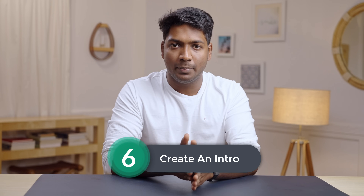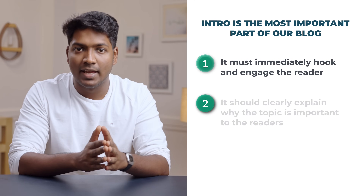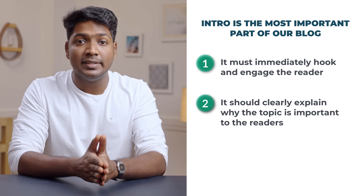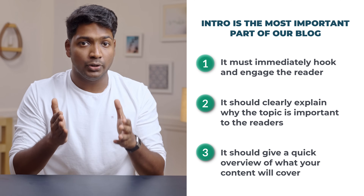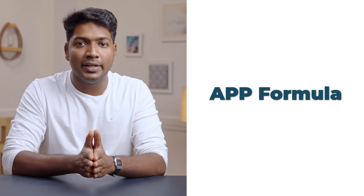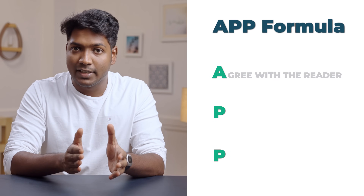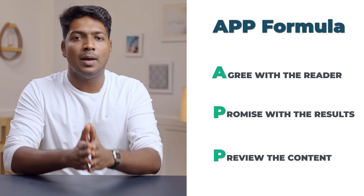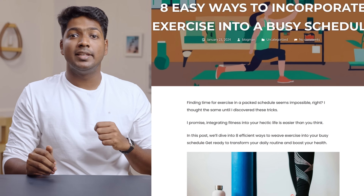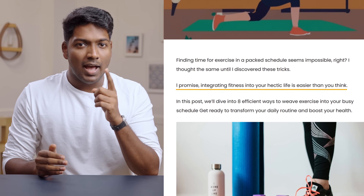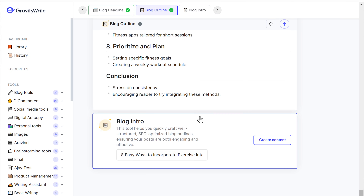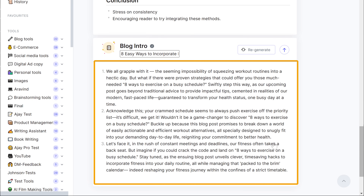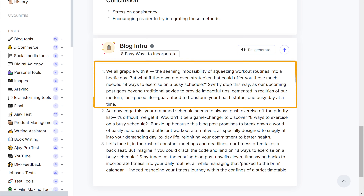Once you have the headline and outline, we can go to the next step which is to create an intro for our blog. The intro is the most important part of the blog post — it must immediately hook and engage the reader, clearly explain why the topic is important by addressing their interests and concerns, and give a quick overview of what your content will cover. There's an APP formula you can use: APP stands for Agree with the reader, Promise with the results, and Preview the content. You can see an example where the first line agrees with the reader, the next line promises the result, and the last line shows a preview. You can also create an intro on GravityWrite — just enter the headline, click create content, and you'll get three different intros to choose from.